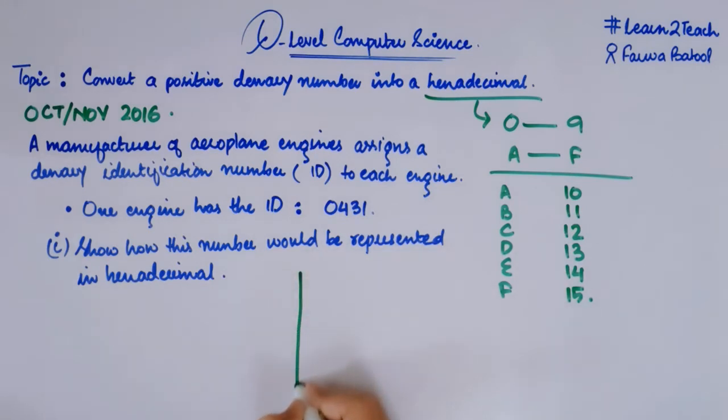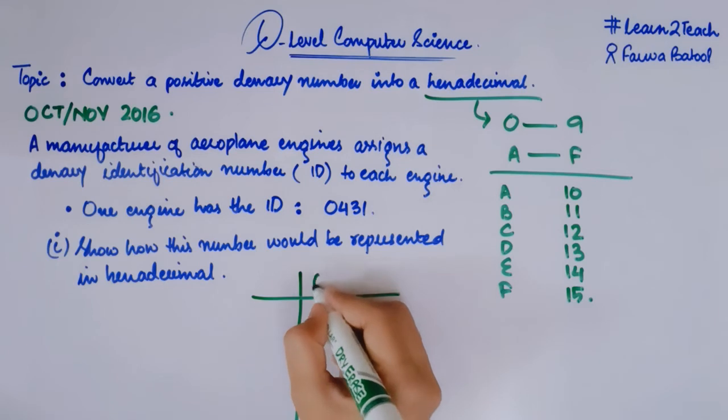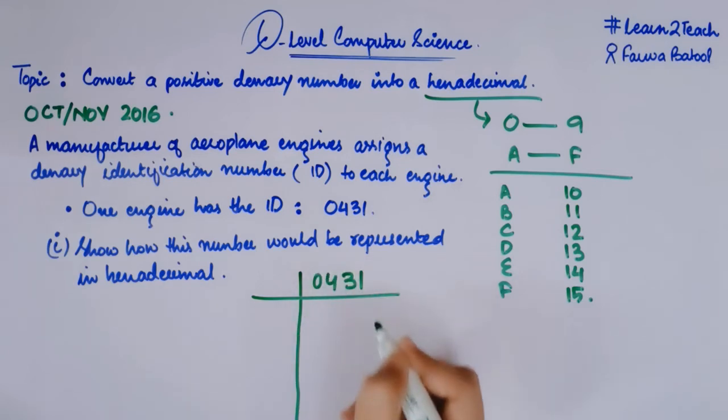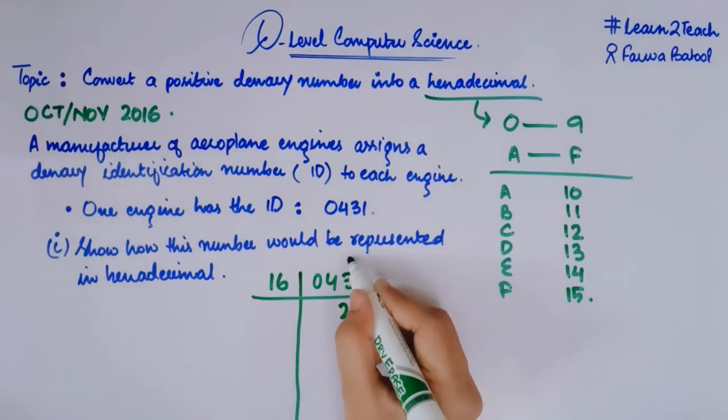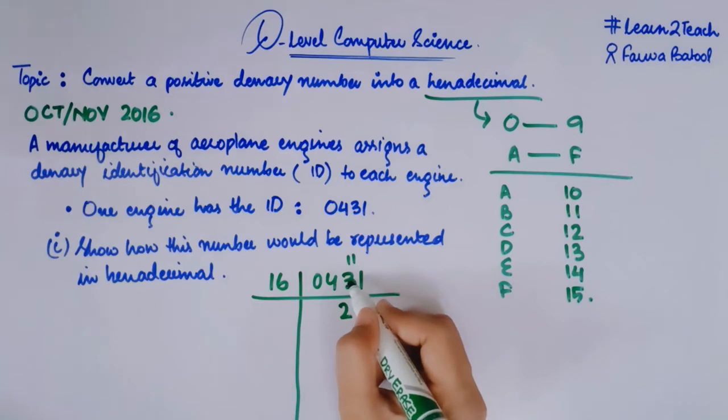Step number one, take an LCM by 16. What is my number? 0431. This zero means nothing. 16, 2 is a 32. What would be the remainder? 11. 43 minus 32 would be 11.